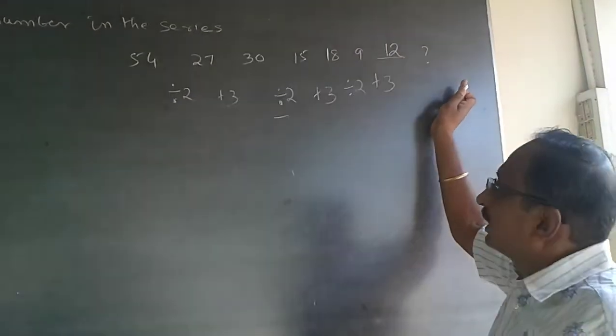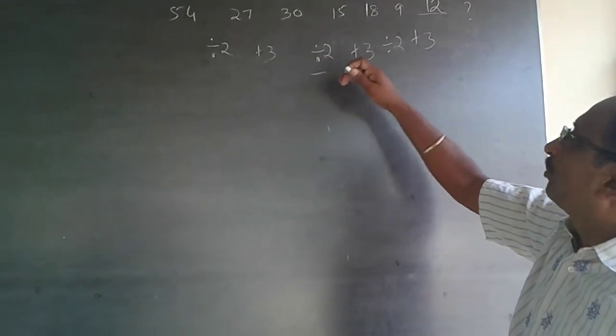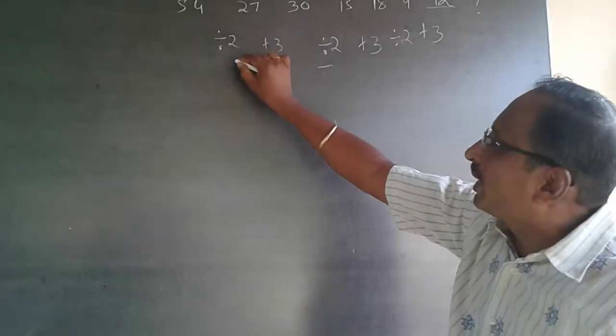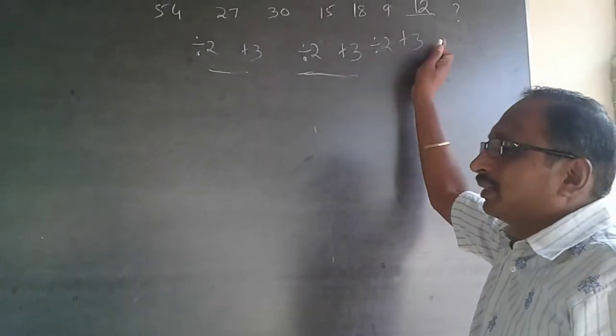After that, next number will be 6. Like that, it will be. Divide by 2 plus 3. Divide by 2 plus 3. Find out the pattern here. See, if the same pattern is applicable. Then, apply it.